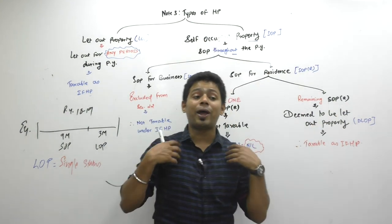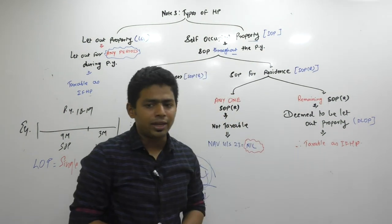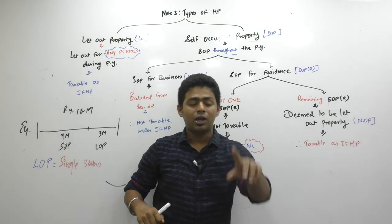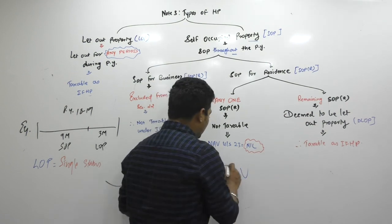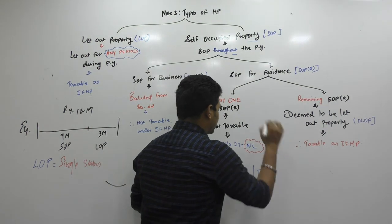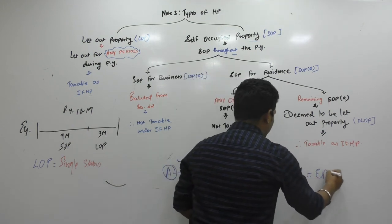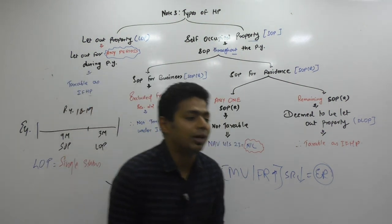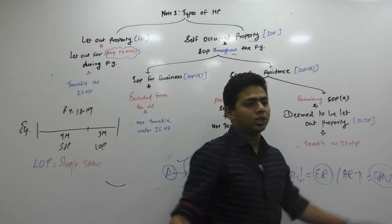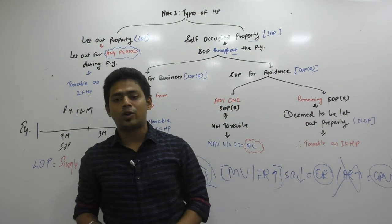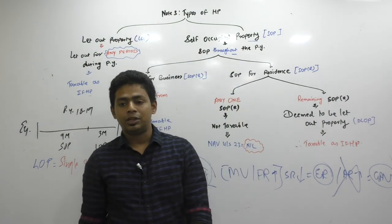Those DLOP properties, despite having no rent, are still taxable as income from house property. Without having actual rent, how can property become taxable? By determining its capacity. Municipal value is compared with fair rent — whichever is higher — and that number is compared with standard rent — whichever is lower — giving us expected rent. Expected rent or actual rent, whichever is higher, gives us gross annual value. In case of DLOP, the gross annual value will always be the expected rent because there is no actual rent.